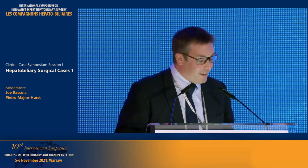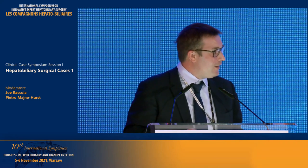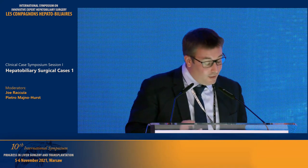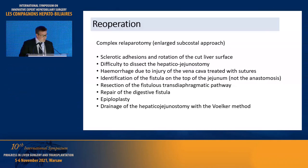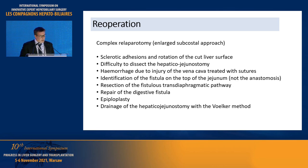In the end, this is what surgery would require. At the time of re-operation it was a complex laparotomy with a large subcostal approach. The dissection was very difficult due to sclerotic adhesions and rotation of the cut liver surface, and the hepaticojejunostomy was not easy to identify.